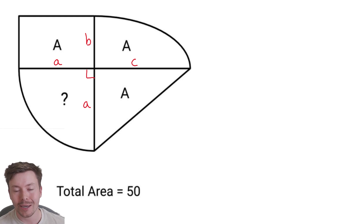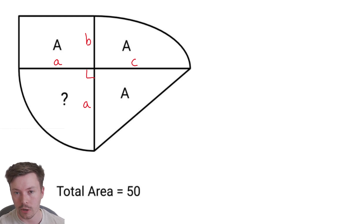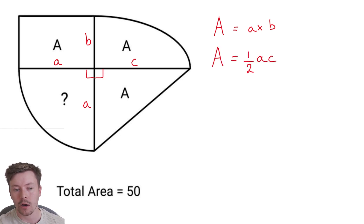From there what you can do is start to work out some of these areas. Because three of the areas we're given are equal to A, we can get some equations by working out the areas of the shapes. Starting off with the rectangle: A is equal to A times B. And the area of the triangle: A is equal to a half of A times C.